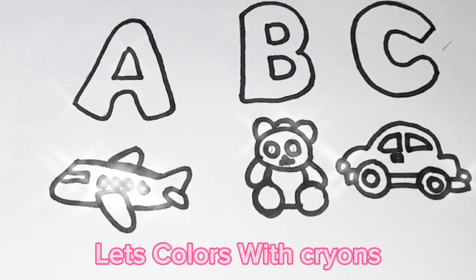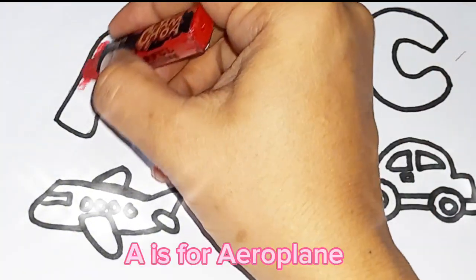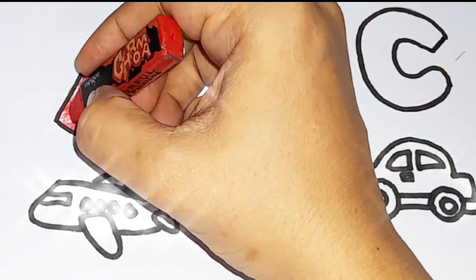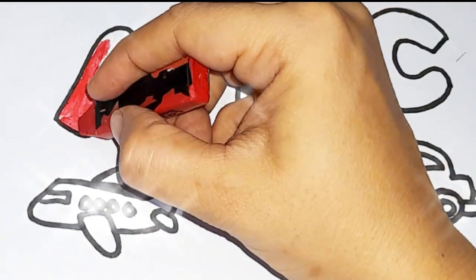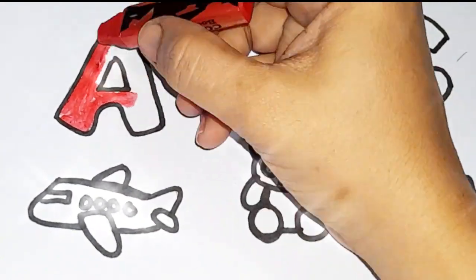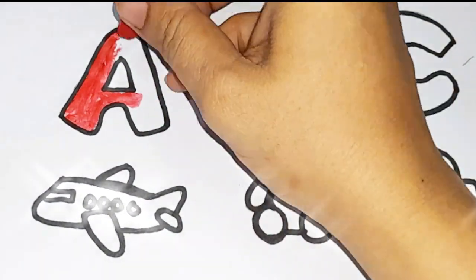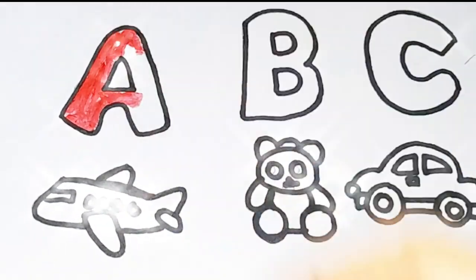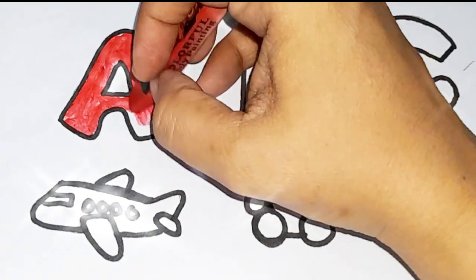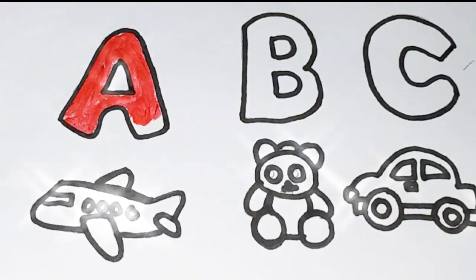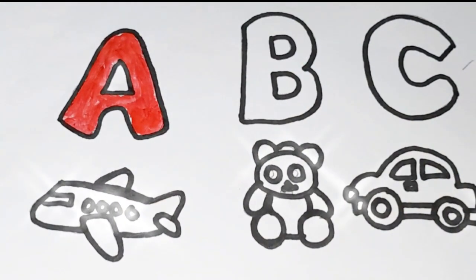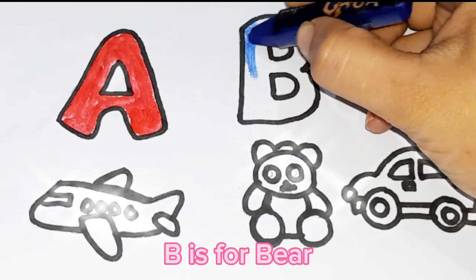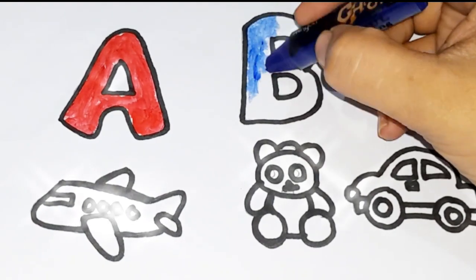Let's color with crayons. A is for aeroplane. A. B. C. D. E. F. G. H. I. J. K. L M N O P.